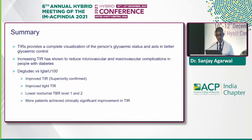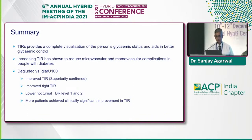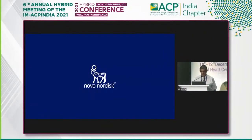In summary: Time in Range provides a complete visualization of the patient's glycemic status and aids in better glycemic control. Increasing Time in Range has been shown to reduce microvascular and macrovascular complications in people with diabetes. When comparing degludec versus glargine U100, there is improved TIR superiority, improved tight time in range (70–140), lower time below range at levels 1 and 2, and more patients achieving clinically significant improvement in Time in Range. Thank you very much.